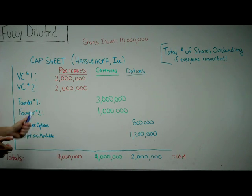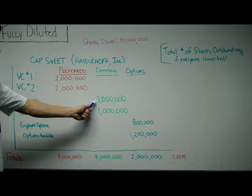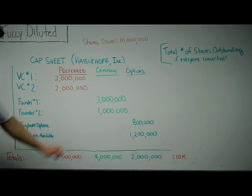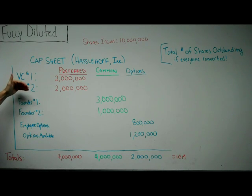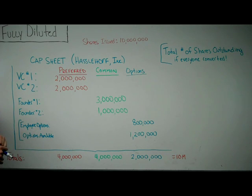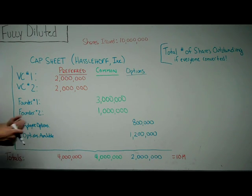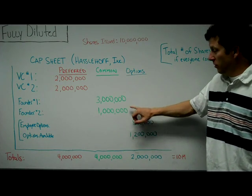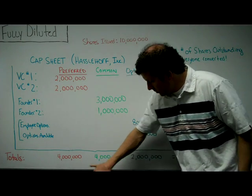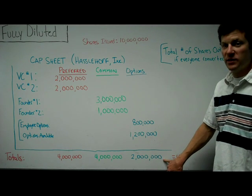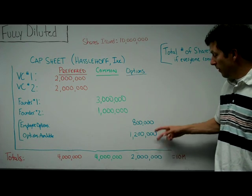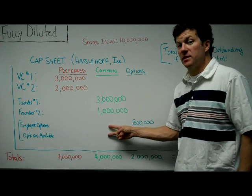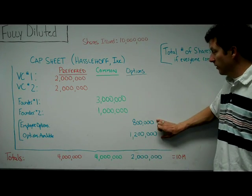The common stockholders are founder number one, who owns three million shares, and founder number two, who owns one million shares. When the VC investors invested, as discussed in other videos, they created an options pool. Some of those options have already been handed out to employees, but none of the employees have exercised their options yet — which is very important. The remaining options are available for the company to hand out.